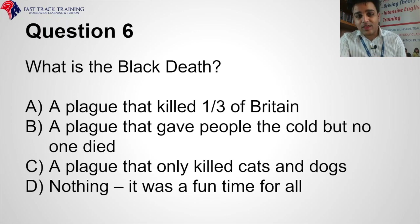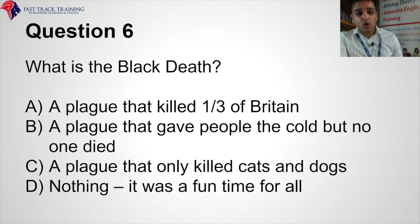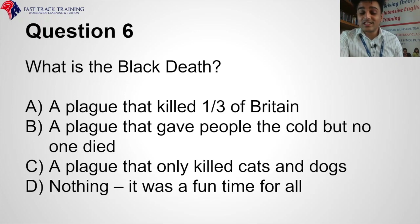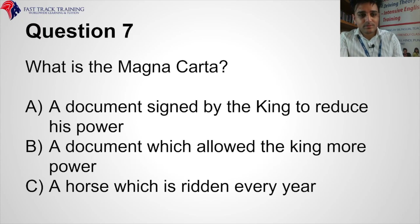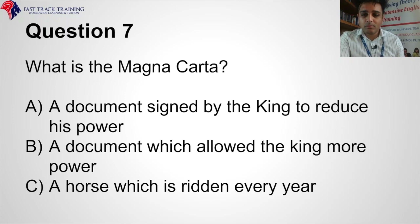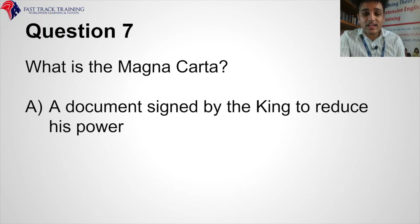Question six: What is the Black Death? A plague that killed a third of Britain, a plague that gave people the cold but no one died, a plague that only killed cats and dogs, or nothing — it was a fun time for all? The correct answer is it was a plague that killed one third of Britain. Question seven: What is the Magna Carta? A document signed by the king to reduce his power, a document which allowed the king more power, or a horse which is ridden every year? It is a document signed by the king to reduce his power.